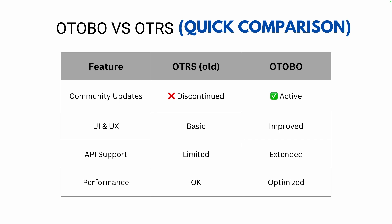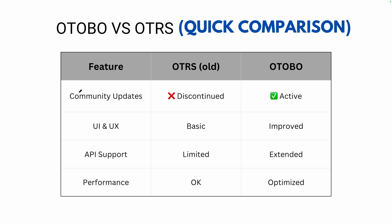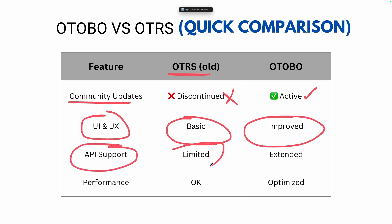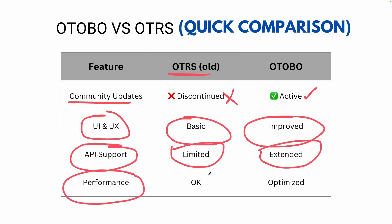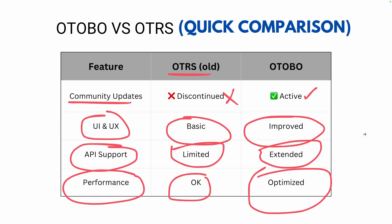Let's compare OTOBO with its predecessor OTRS. For community updates: OTRS is discontinued, while OTOBO is actively releasing updates. For UI/UX: OTRS had an old UI, while OTOBO has a completely new modern UI — I will show the differences in this video. For API support: OTRS had limited API support, while OTOBO has extended API support. For performance: OTRS had limited performance, while OTOBO has optimized performance.